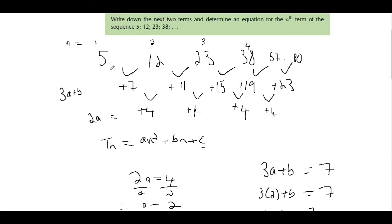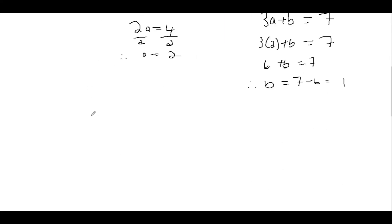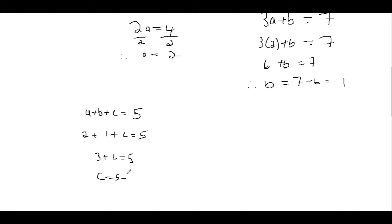To find c, we use our n = 1 term: a + b + c = 5. We know a = 2 and b = 1, so 2 + 1 + c = 5, which gives 3 + c = 5. Taking 3 over, c = 5 minus 3, therefore c = 2.